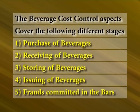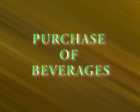The beverage cost control aspects cover the following different stages: purchase of beverages, receiving of beverages, storing of beverages, issuing of beverages, and frauds committed in the bars. Let us move on to the first objective, purchase of beverages.